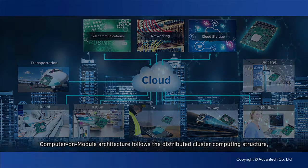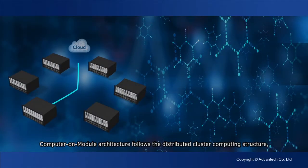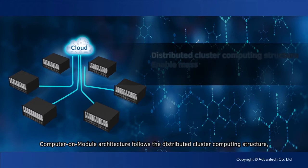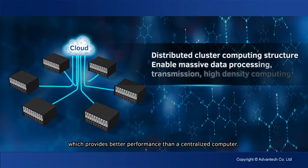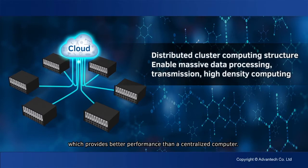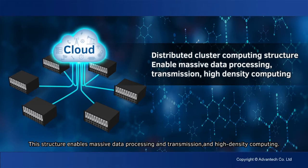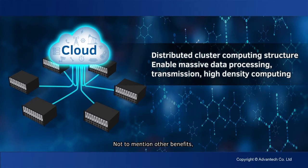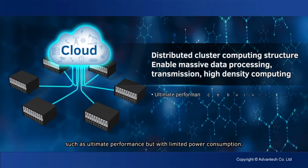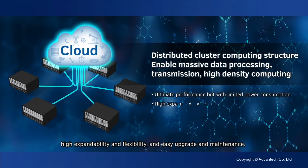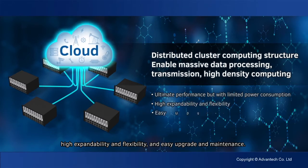Computer on module architecture follows the distributed cluster computing structure, which provides better performance than a centralized computer. This structure enables massive data processing and transmission and high-density computing, not to mention other benefits such as ultimate performance with limited power consumption, high expandability and flexibility, and easy upgrade and maintenance.